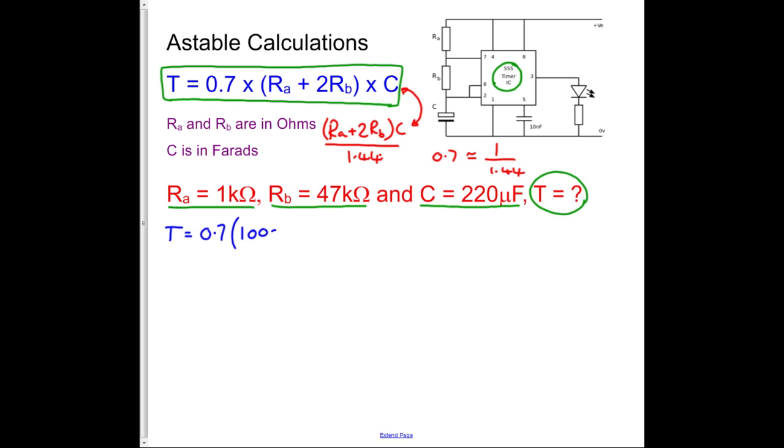T equals 0.7 brackets. Now it's 1 times 10 to the 3, because I'm going to use the standard form throughout. So let's find out plus 2 times 47 times 10 to the 3 multiplied by C, which is 220 times 10 to the minus 6. Now just a very brief note before we carry on, what I've noticed there is that k is equivalent to 10 to the 3, and micro is equivalent to 10 to the minus 6, which you should be familiar with.